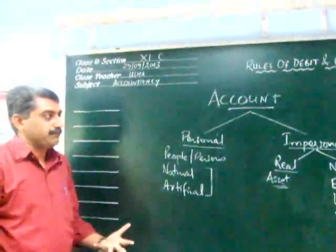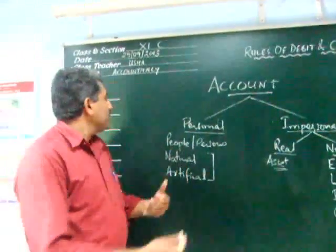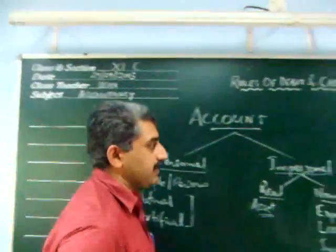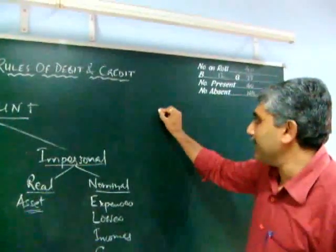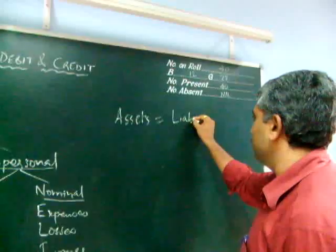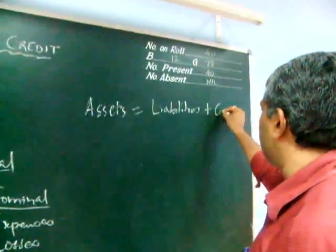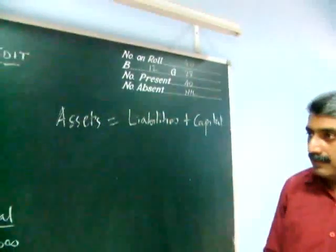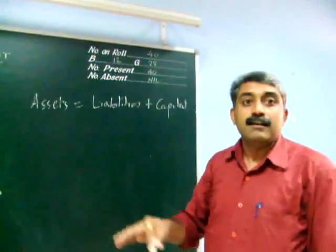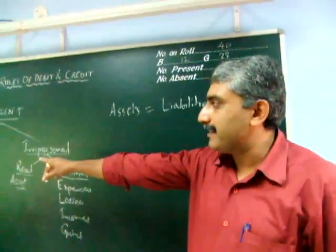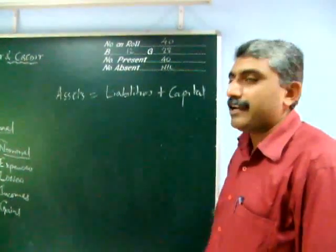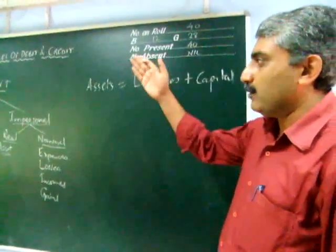There is one aspect which is left out — liability. Because in the accounting equation, assets equal liabilities plus capital. Out of this equation, all aspects affecting assets are taken care of, but liabilities and capital are not appearing in any type of account so far. We need to understand that liabilities and capital belong to personal accounts.